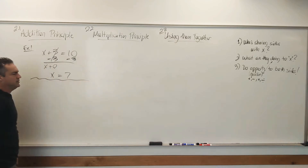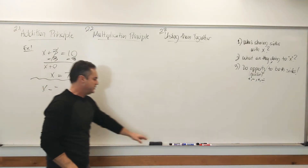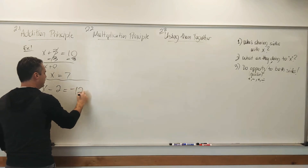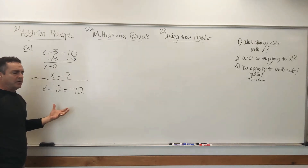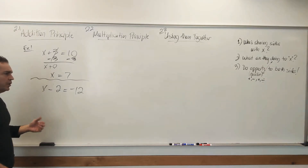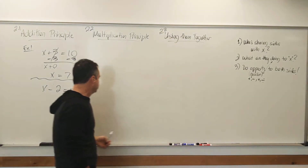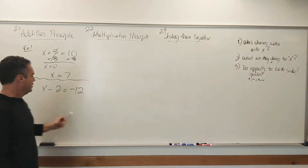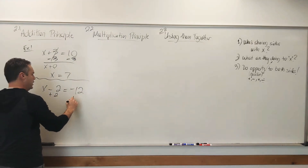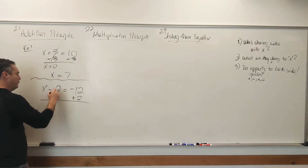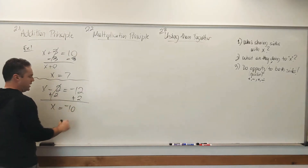When we have a problem we can't do in our head, like x minus 2 equals negative 12, we can use these algebraic skills. Who is sharing sides with x? 2 is. What's it doing? Subtracting. What's the opposite of subtraction? Addition. We're going to add 2 to both sides. These cancel, and we just get x. Negative 12 plus 2 is negative 10. So we've come up with that answer.